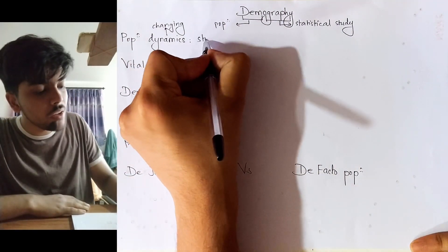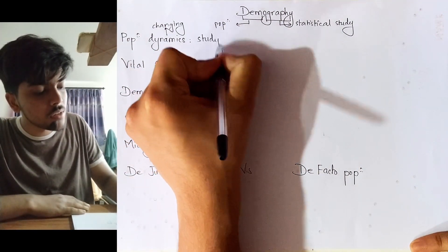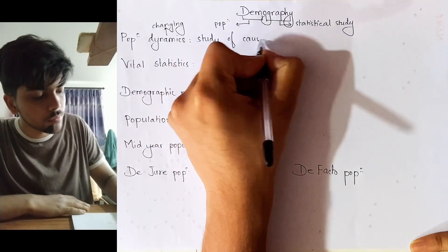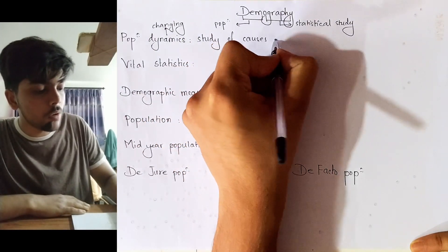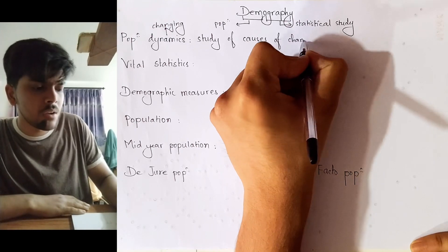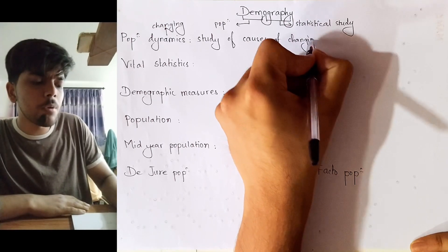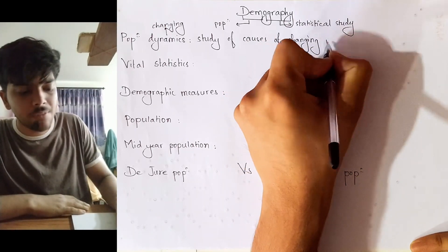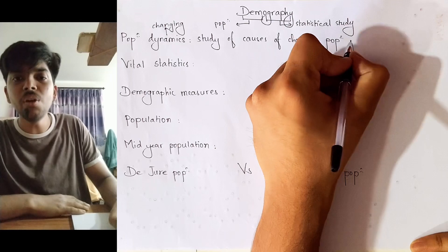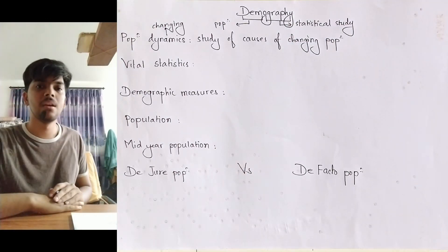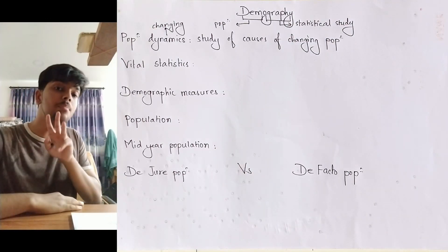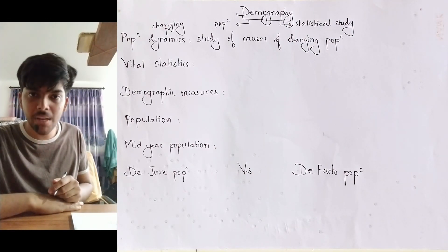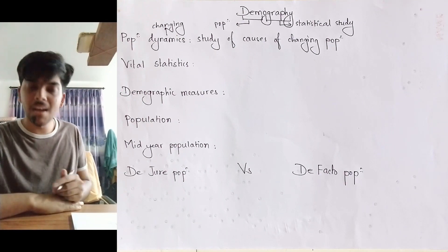Population dynamics is the study of the reasons or causes of changing population, because the population of a particular place is never constant. It's continuously changing, and there are three major reasons for the change of population of a particular place.